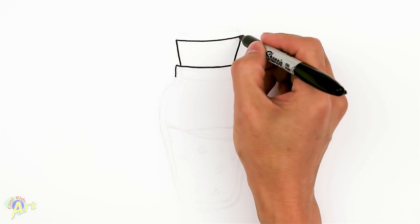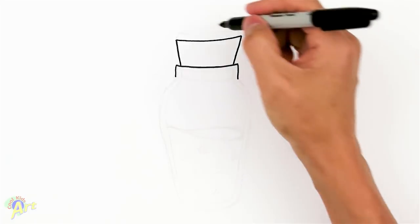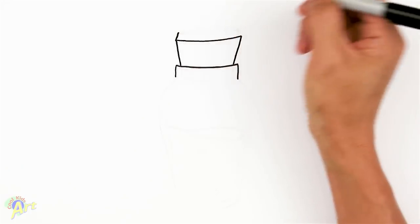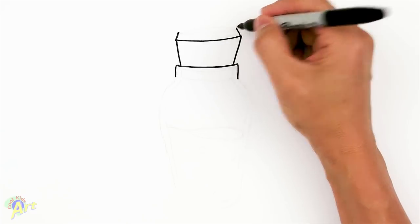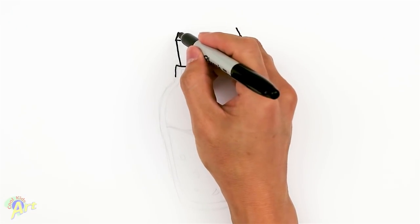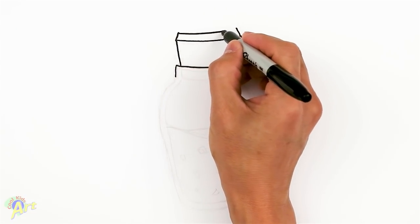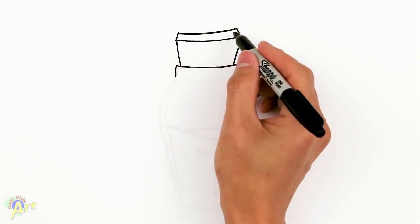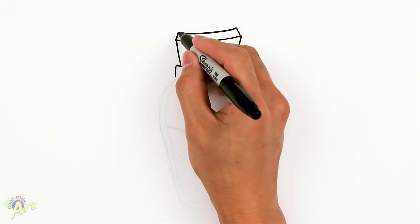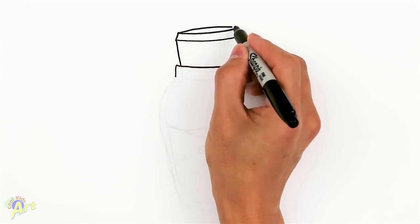And then from here, we're going to go in a little bit and again draw another curve to connect that. Once we have this curve, we can draw in the opposite curve. This is going to be the very top of the cork.